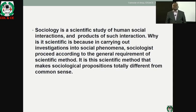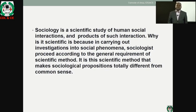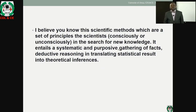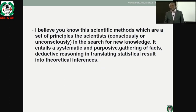Why is it scientific? It is because in carrying out investigations into social phenomena, sociologists proceed according to the general requirements of scientific methods. It is the scientific method that makes sociological propositions totally different from common sense. Scientific methods are the set of principles scientists use, consciously or unconsciously, in search of new knowledge. It entails systematic and purposive gathering of facts, and deductive reasoning in translating statistical results into theoretical inferences.